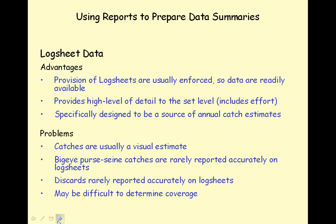Let's look at annual catch estimate reports based on log sheets only. Log sheet data are primarily used to estimate catches because these data are usually readily available, since most fisheries government offices have enforced the collection of log sheets through licensing. Log sheets provide a high level of detail and are specifically designed to be a source of annual catch estimates. Disadvantages include catch weights being recorded as a visual estimate, Bigeye Tuna purse seine catches and discards are rarely reported accurately, and it may be difficult to determine coverage.